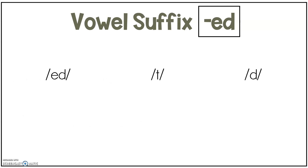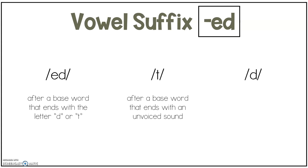So there are three sounds that the vowel suffix ED can make: ED, T, or D. When is it going to make those different sounds and how do you know which sound it will make? It will make the ED sound after a base word that ends with the letter D or T. It will make the T sound after a base word that ends with an unvoiced sound. It will make the D sound after a base word that ends with a voiced sound.